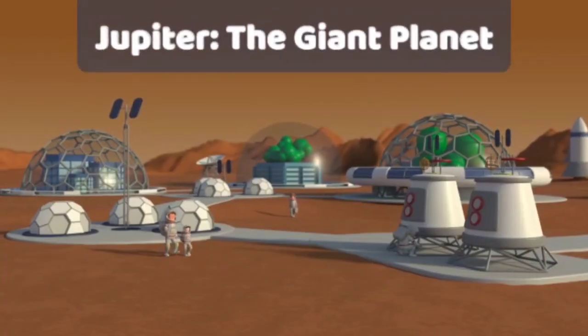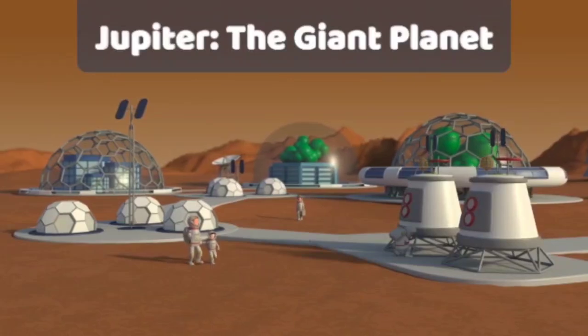Jupiter is the biggest planet, with a diameter of about 139,820 kilometers. It's a giant!